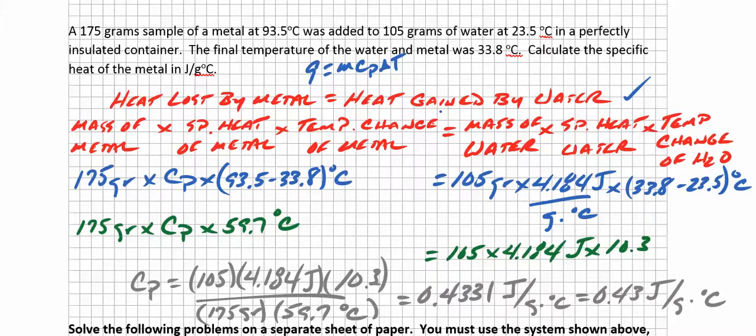Remember that heat lost or gained can be calculated using this formula. We said that Q is equal to mCp times delta T, the change in temperature. With this formula in mind, let's go about finding the heat lost by the metal. The mass of the metal times the specific heat of the metal, that's what we're looking for, by the way, times the temperature change of the metal is equal to the mass of the water times the specific heat of the water times the change in the water's temperature.